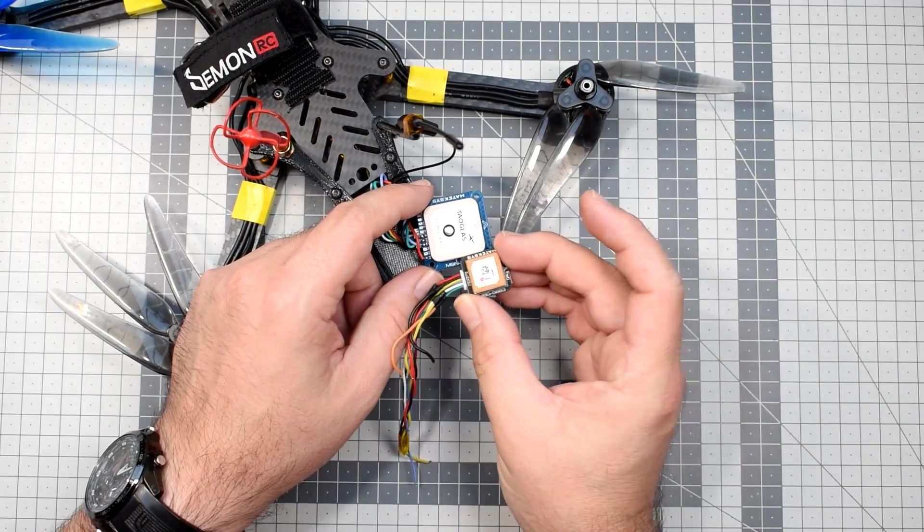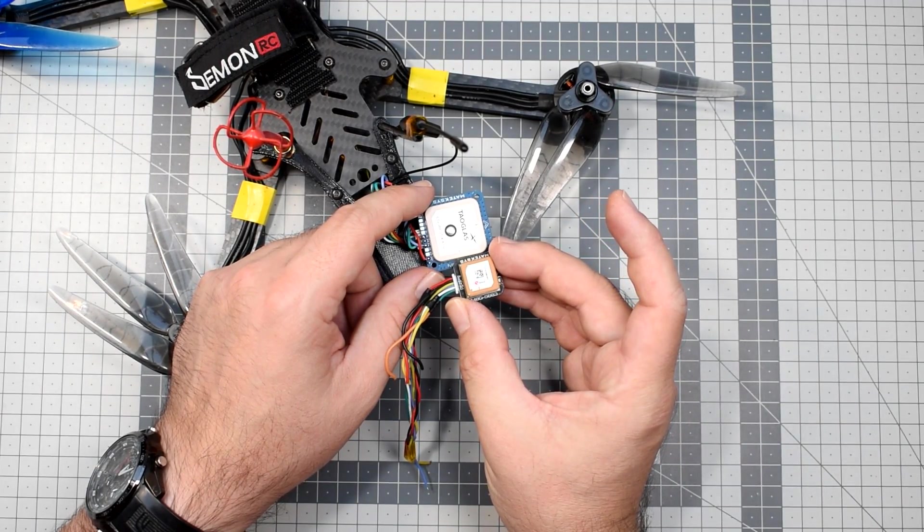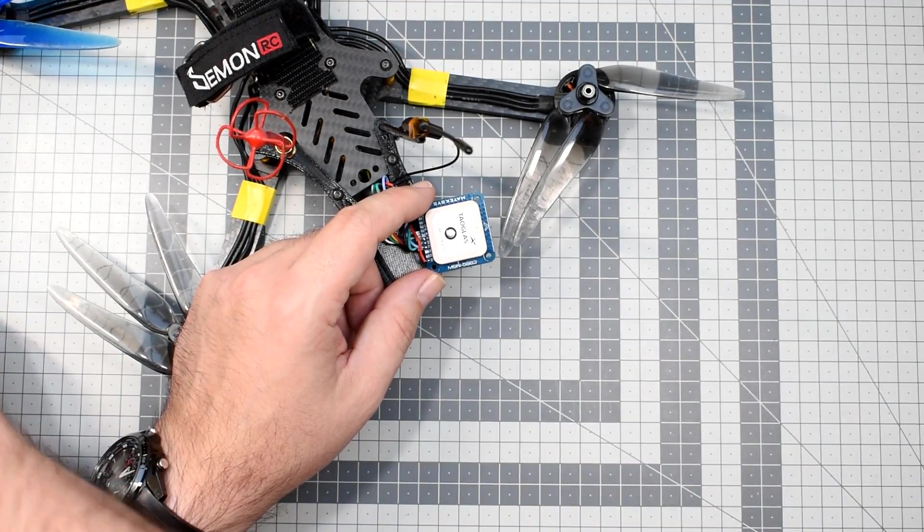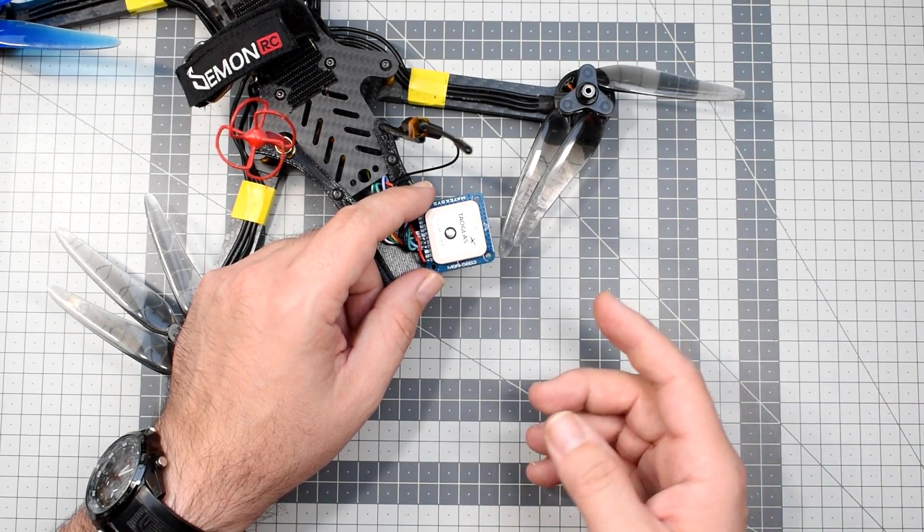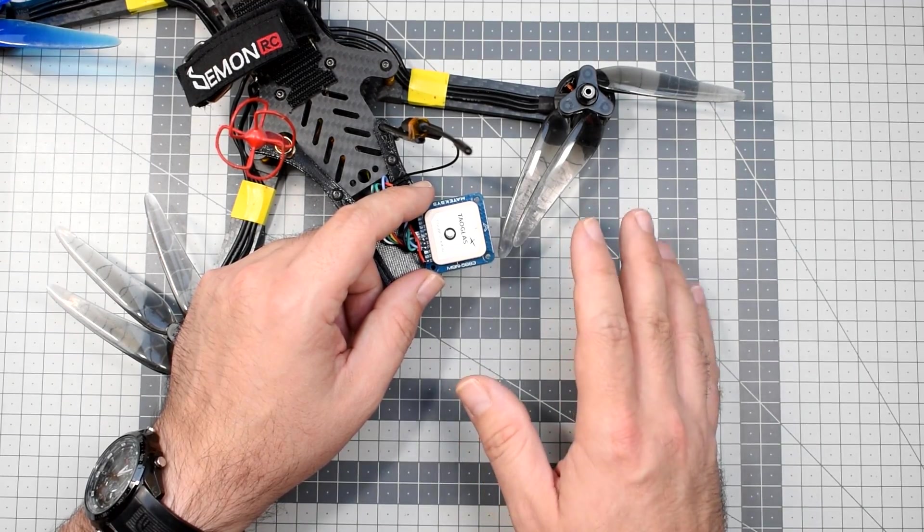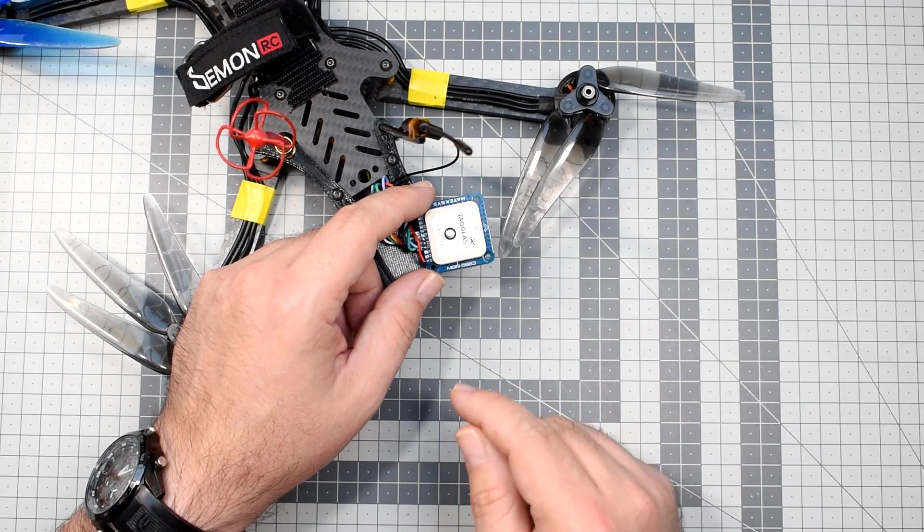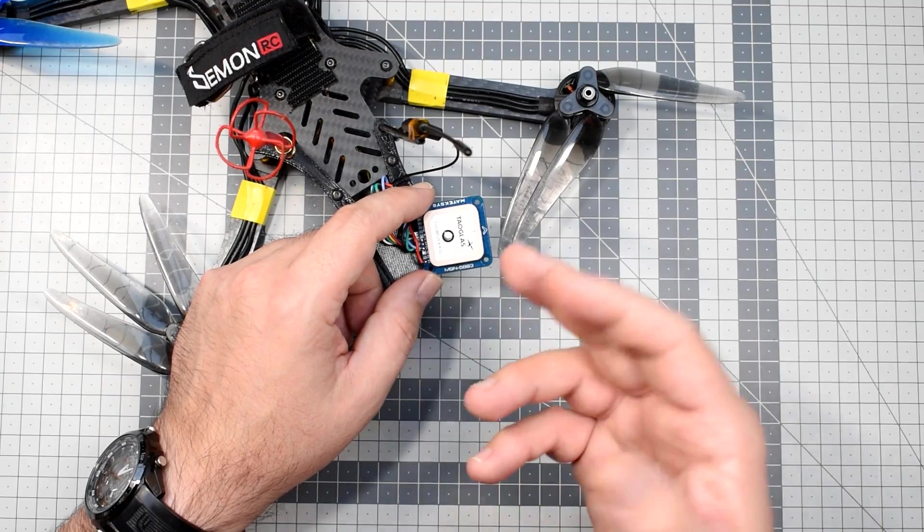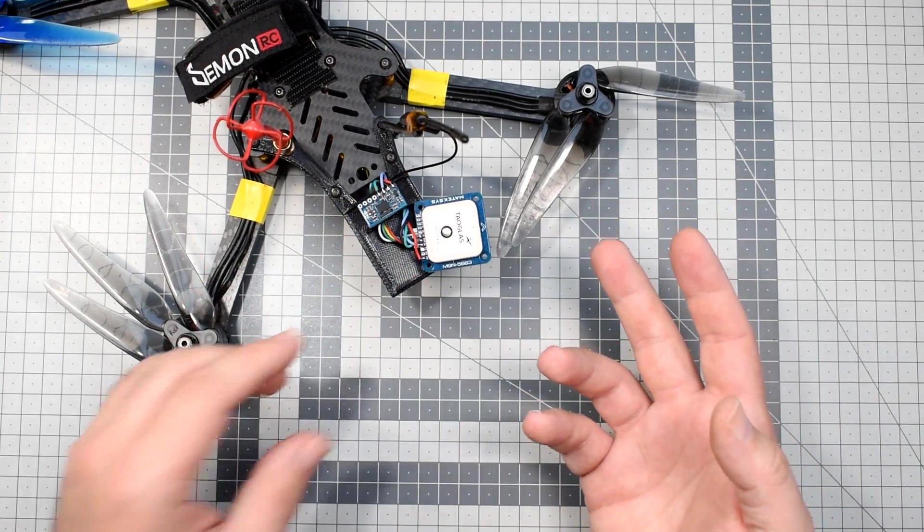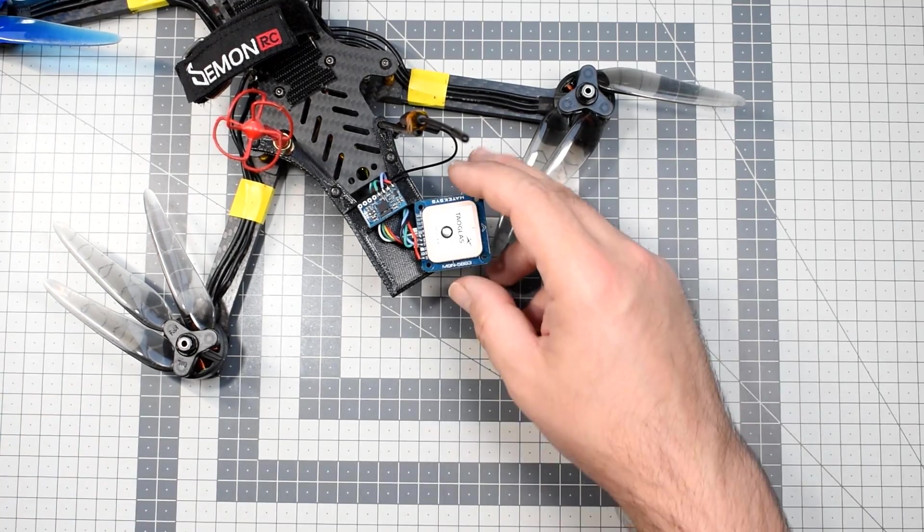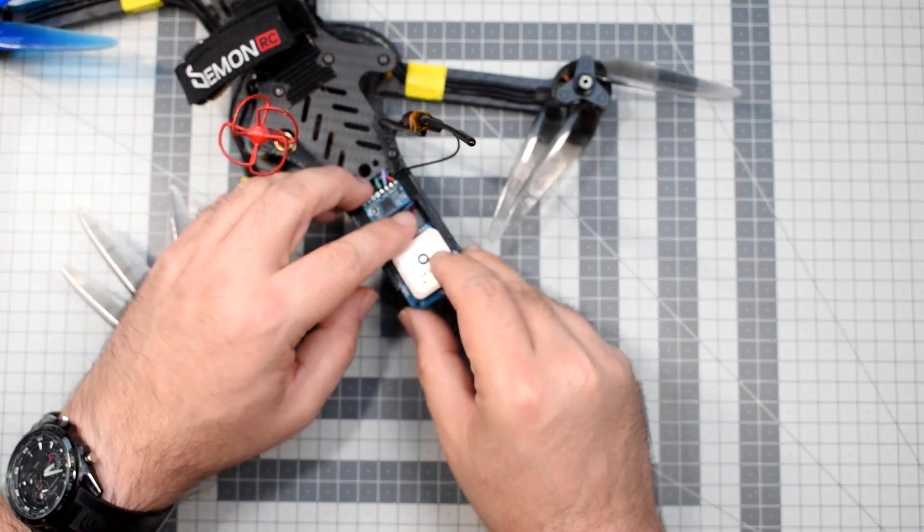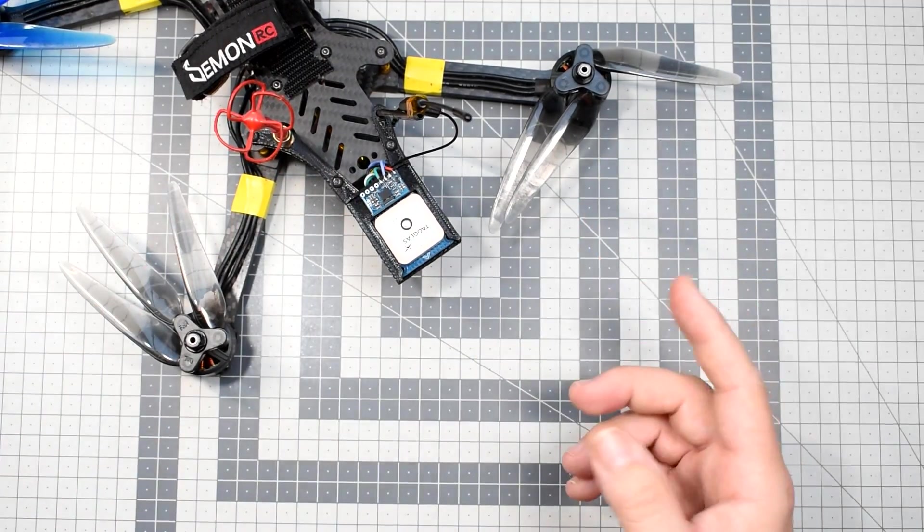This is form factor more or less of the Beitian BN880, much bigger antenna than the previous generation of Mateksys, which is the price. Putting this on a 5-incher probably is not the best idea. However, the airplane will kindly accept this big antenna, as well as some bigger quads. Putting this thing in the back of the Pirx was absolutely not a problem at all.